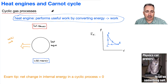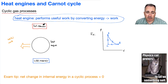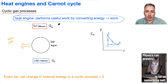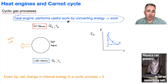Let's talk about how it really works with these diagrams. We have a hot reservoir, we have a cold reservoir, and we have this heat engine. The hot reservoir has heat energy — we'll call it QH for hot. The cold reservoir has QC for cold. Keep in mind it's also related to temperature: the temperature of the hot reservoir or the temperature of the cold reservoir.